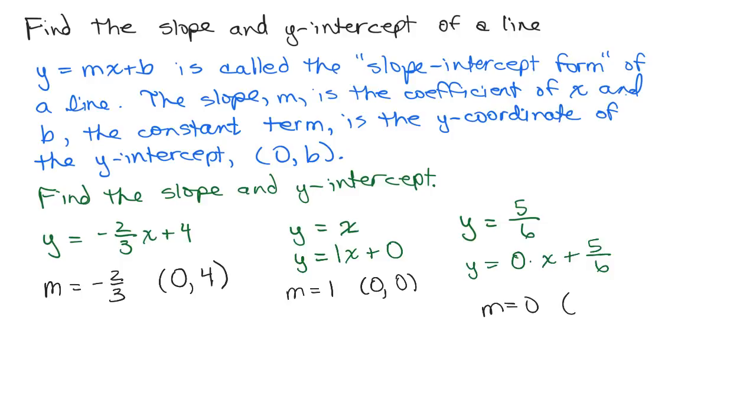And then, of course, again, the y-intercept, you're putting in 0 for the x and you get 5/6. It's always this constant here. So once you put it in this form, you can identify the slope and y-intercept.